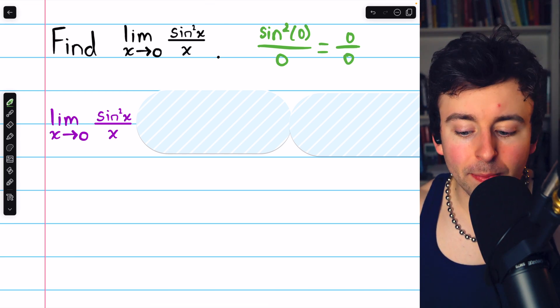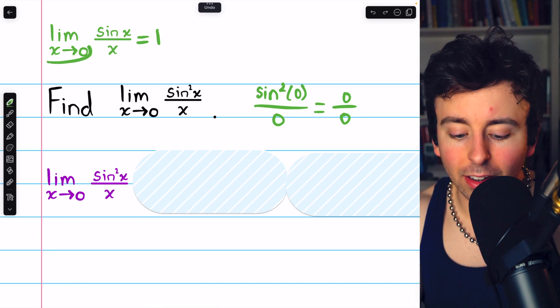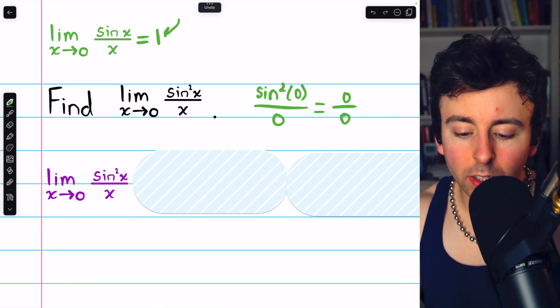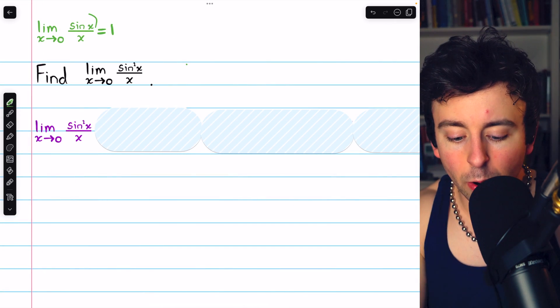But this is an easy limit. We just have to know that the limit of sine x over x as x approaches 0 is equal to 1. Link in the description to my lesson proving that. Since we know this,